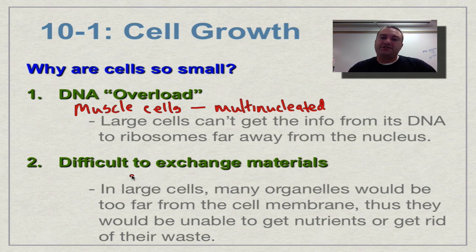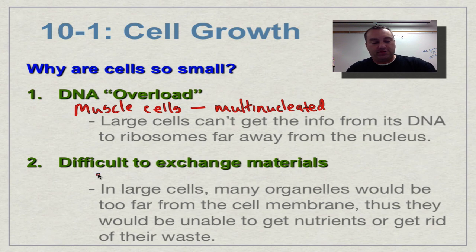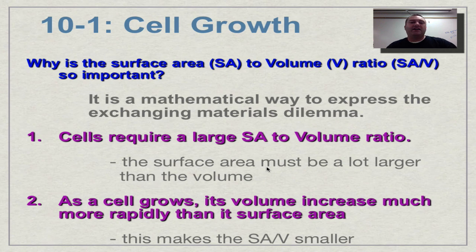The second reason cells stay small deals directly with size: we need to be able to get materials in and out of the cell efficiently, and a large cell has trouble with that. This is explained by a math ratio called the surface area to volume ratio. What needs to happen is the surface area must be much larger than the volume — six, seven, eight, nine, ten times larger — so you want a large surface area to volume ratio.